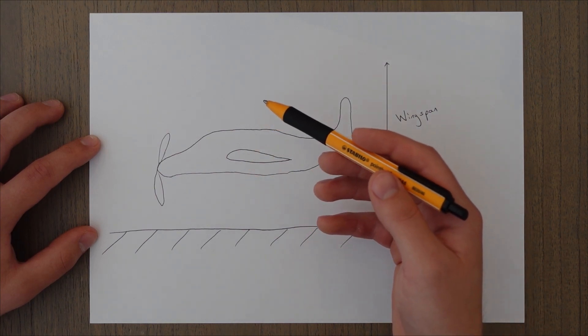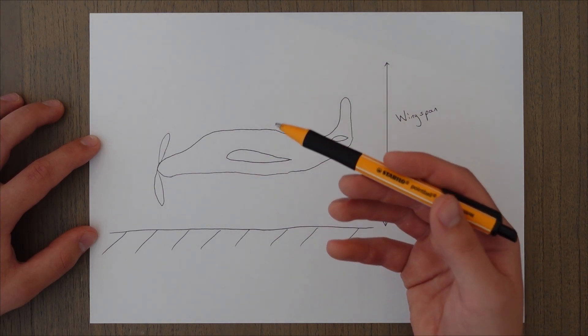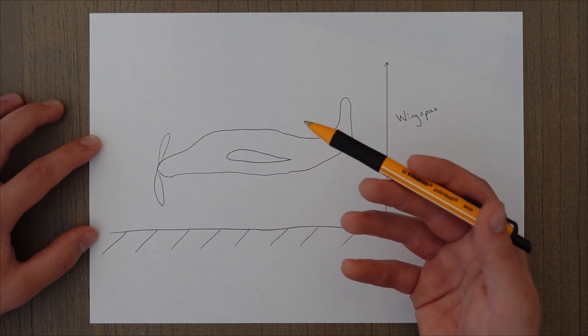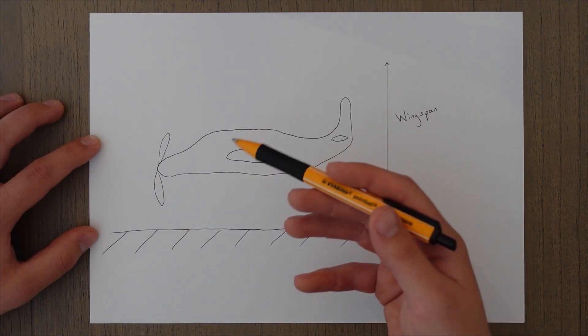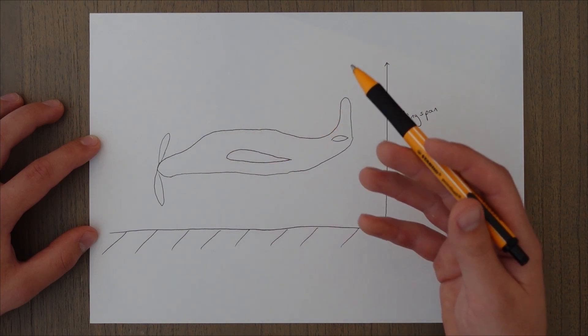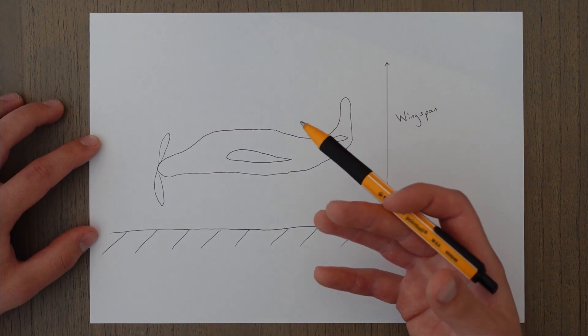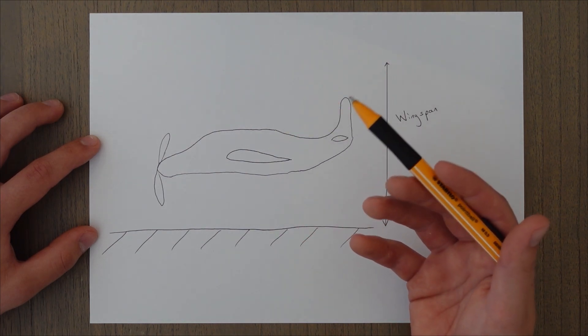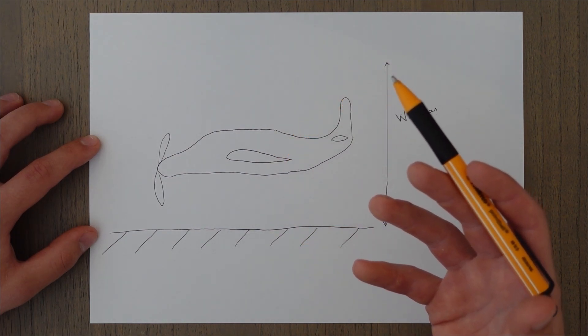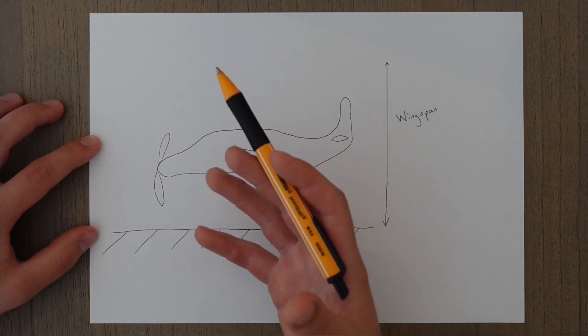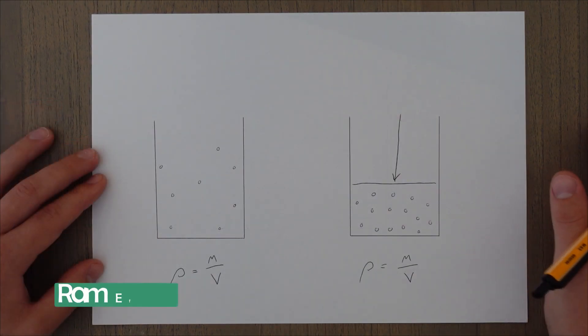This means that a high-winged aircraft will experience this a lot less than a low-wing aircraft. This reduction in the ground effect makes high-winged aircraft less susceptible to floating down the runway. And it is one of the reasons why high-winged aircrafts are used on short runways. This is because it will pose less risk of floating down and taking up a full runway on landing.